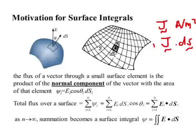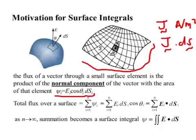If you have a complicated surface like the one shown here, and the function J can change from one surface element to another, in order to calculate the flux of the vector quantity over each one of these elements, the flux through each element is equal to the normal component multiplied by the area. The normal component of a vector E is equal to E cosine theta, where theta is the angle between the vector E and the normal to the area.